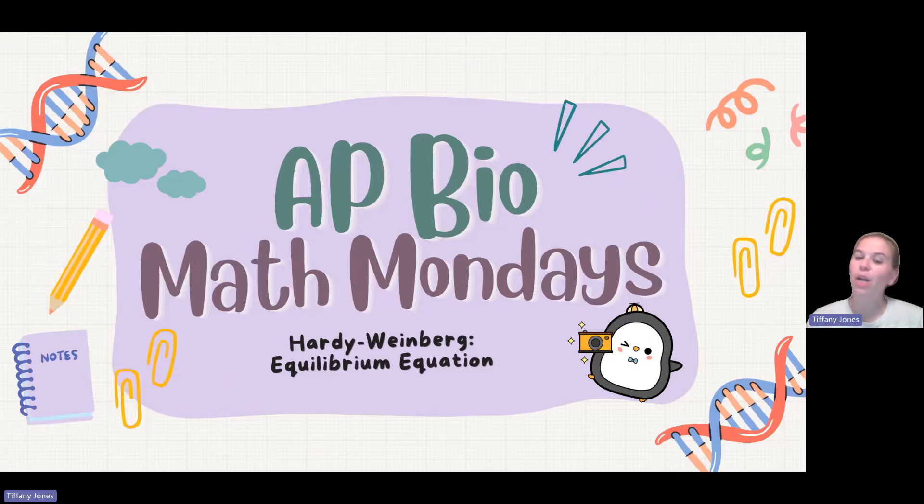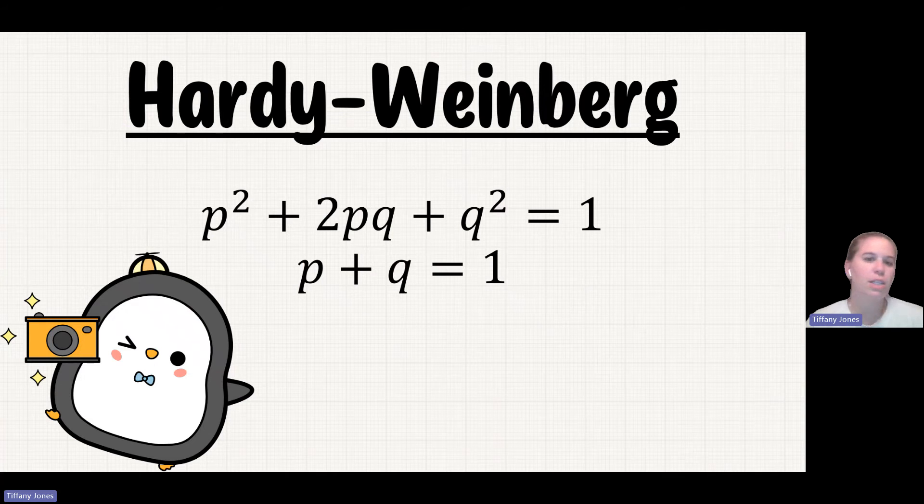Let's say we have a penguin. So we're looking at Hardy-Weinberg, specifically the equilibrium equation. You're gonna use this equation when you're not given the number of each genotype. So here's the equation. This is based on a population being in equilibrium. We have P² + 2PQ + Q² = 1, and then P + Q = 1.